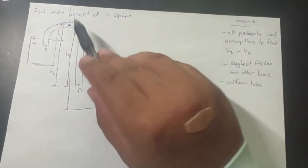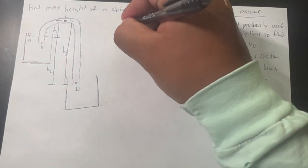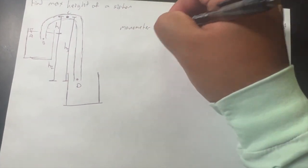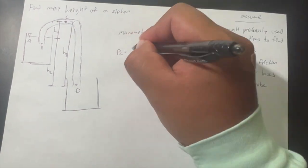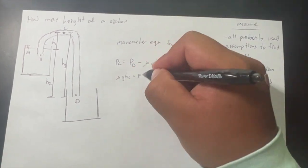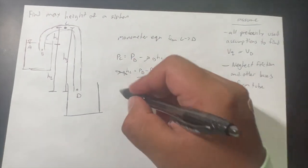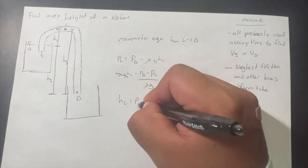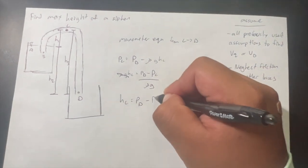We will use a manometer equation from point C to D, as shown below. After writing down the equation, it needs to be rearranged to solve for height. At point C, the pressure is also known as the saturation pressure, which is lower than normal pressures.